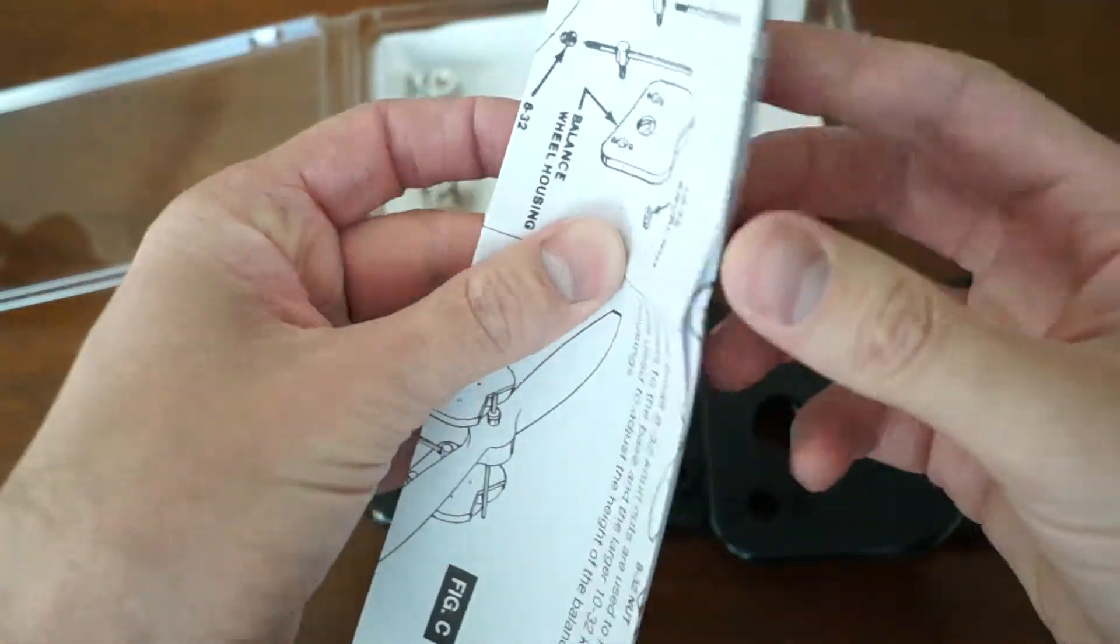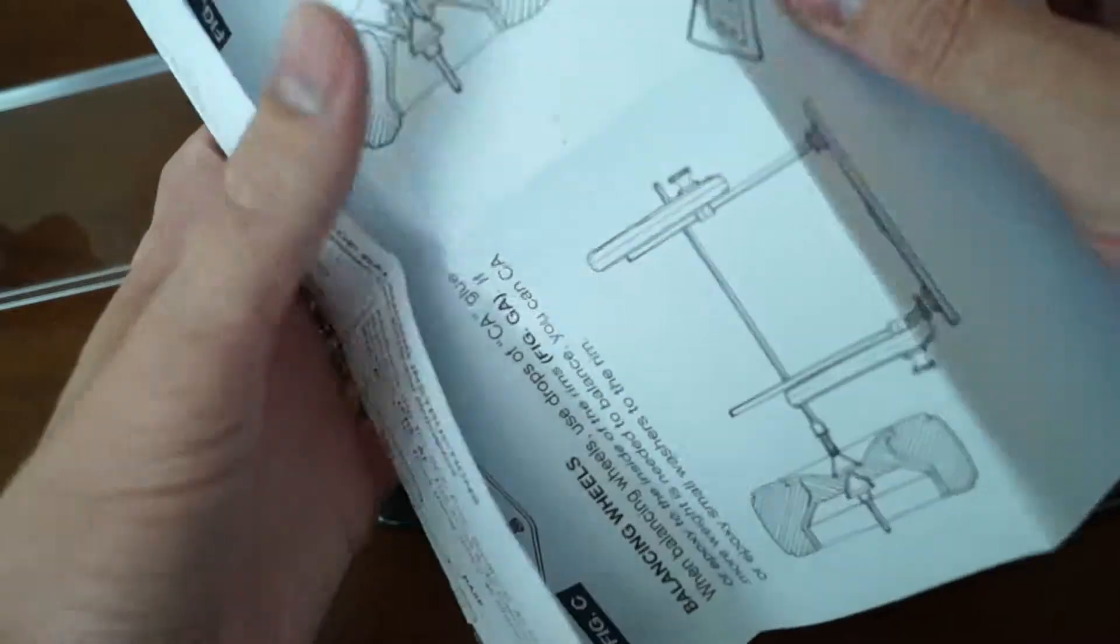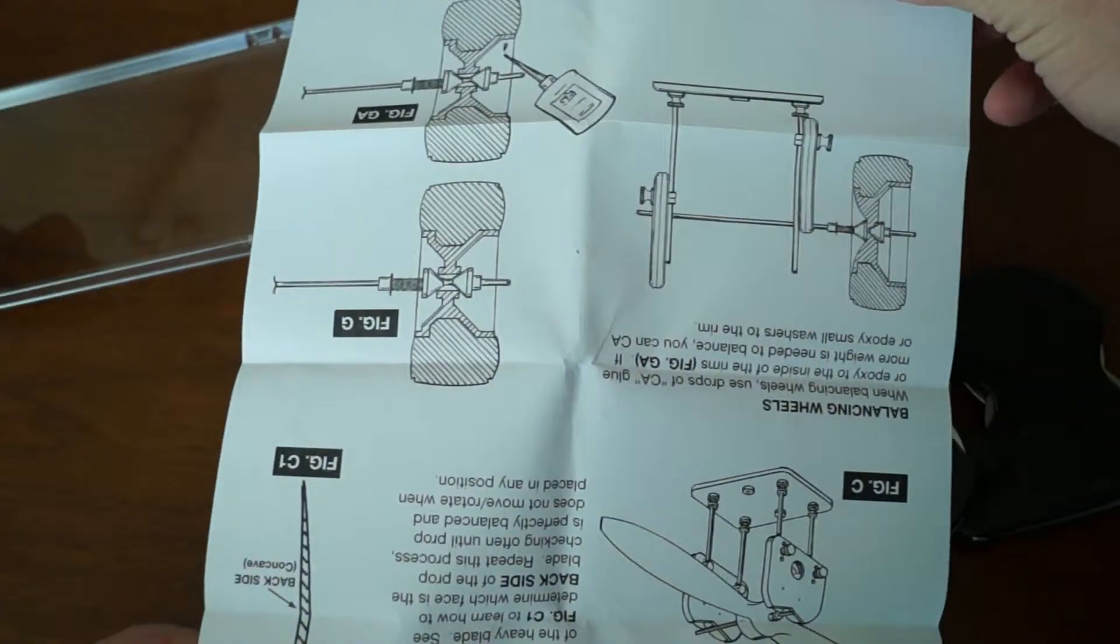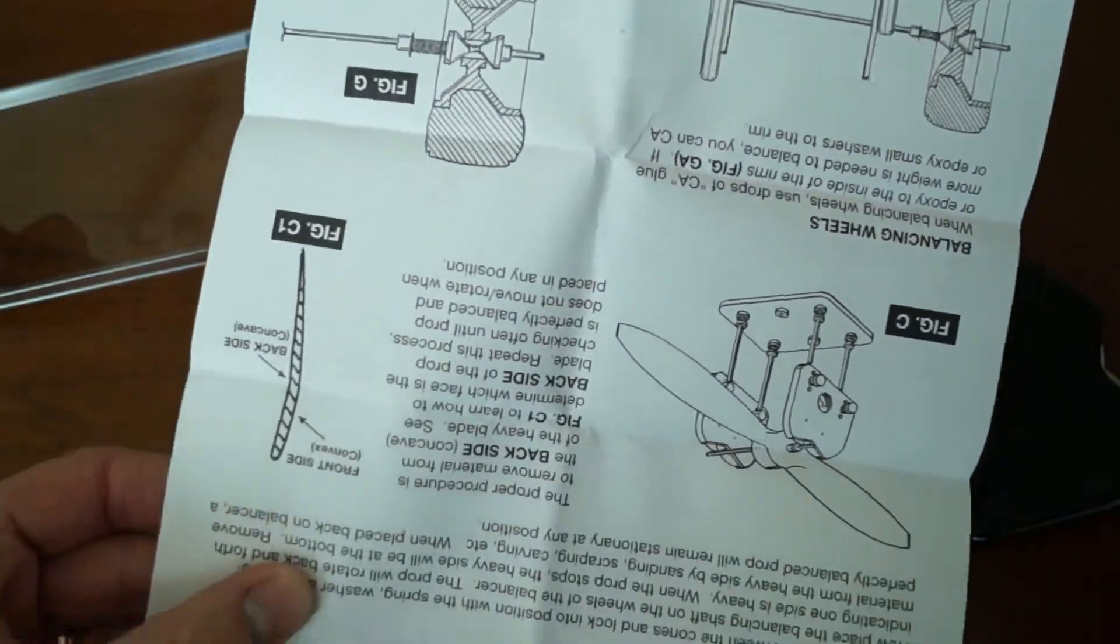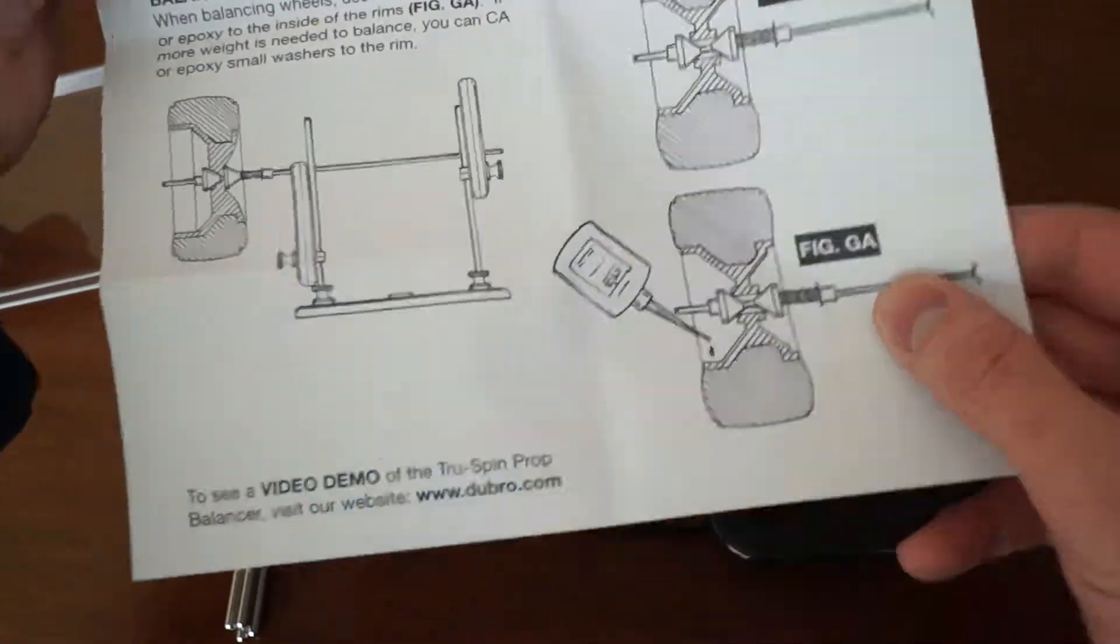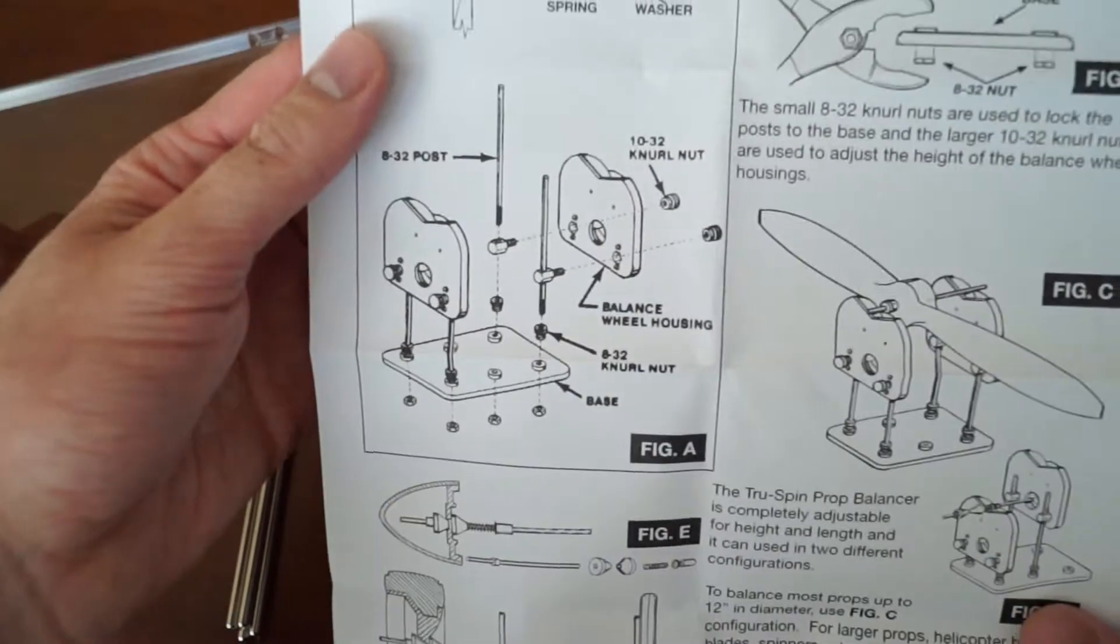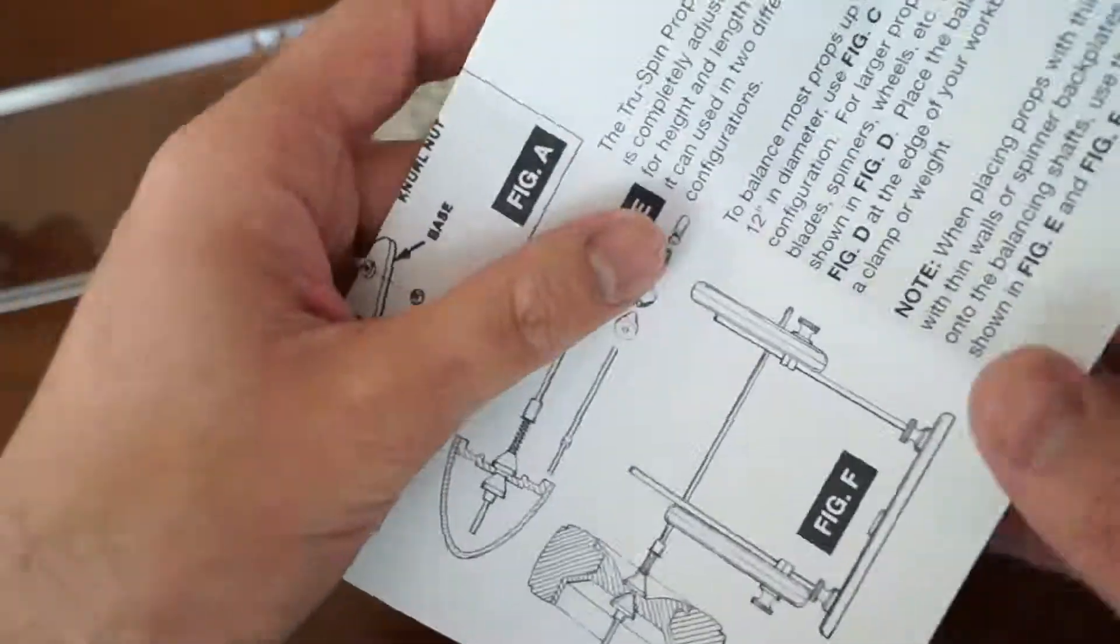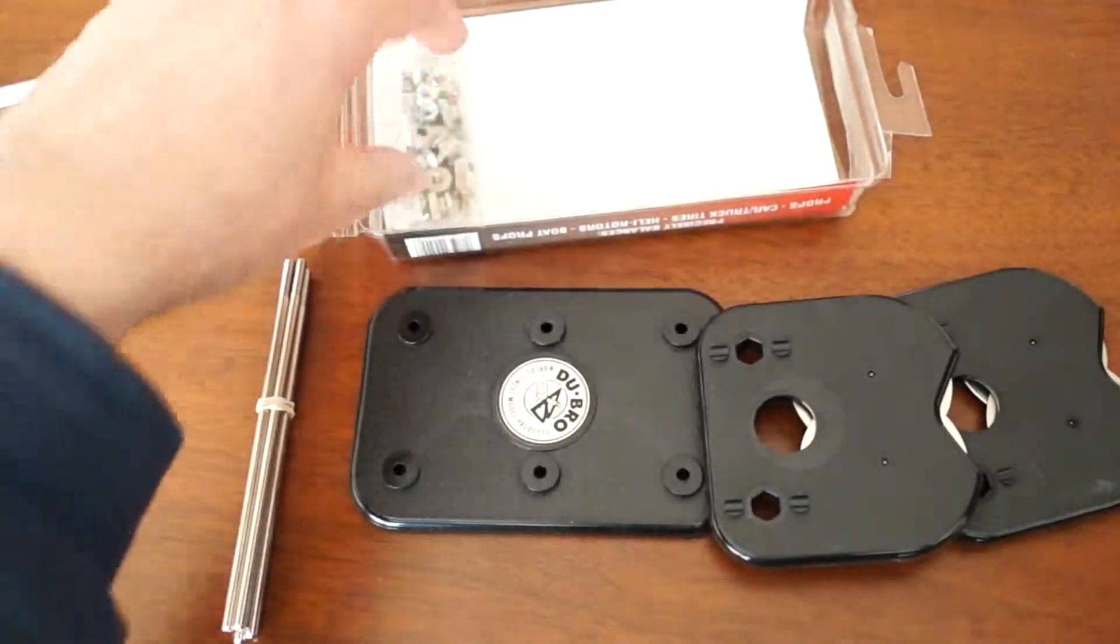As you can see here, there's a manual showing exactly how you should mount everything and the process for balancing a prop, the recommended steps and how to mount the kit. It's really well documented, and this is all the parts for assembly.